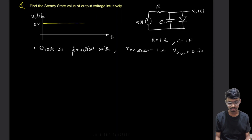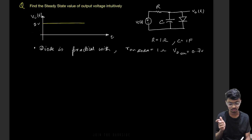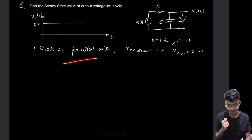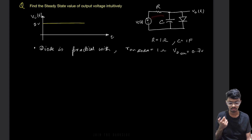In this question we have to find the output voltage at steady state intuitively. The circuit has one voltage source with a 5V step input, one R and C in series, with a diode in parallel with a capacitor. The diode is practical with an on-resistance of 1 ohm and a cut-in voltage of 0.7V. The R value and C value are both 1 ohm and 1 farad respectively.